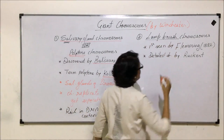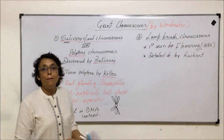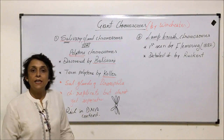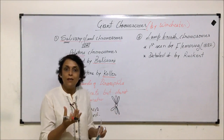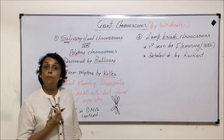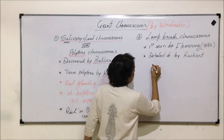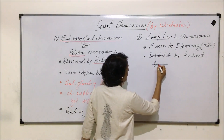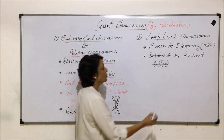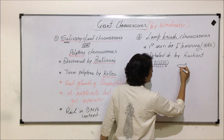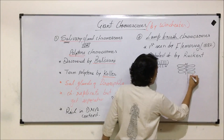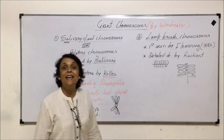The second type is known as lampbrush chromosomes. They are called lampbrush because they look like a lamp brush. If you have seen the glass kerosene lamps with a glass cover, there is a special type of brush used to clean them. That kind of structure is seen in this chromosome as well — there are loops on the chromosome, and because of these loops the appearance becomes like a lamp brush.